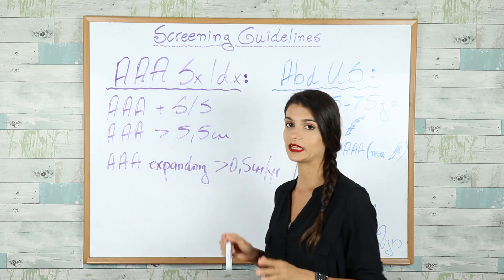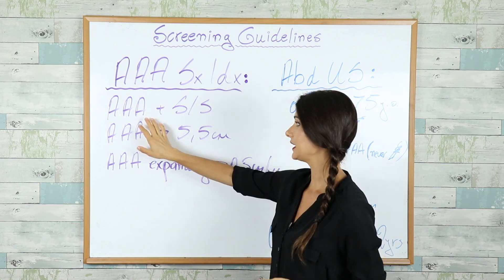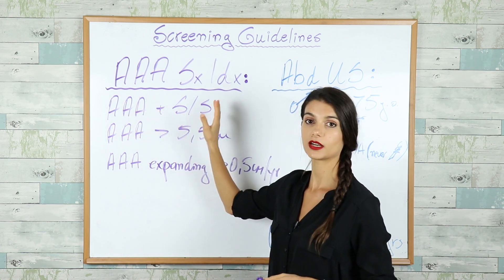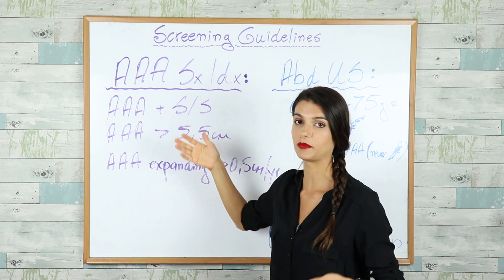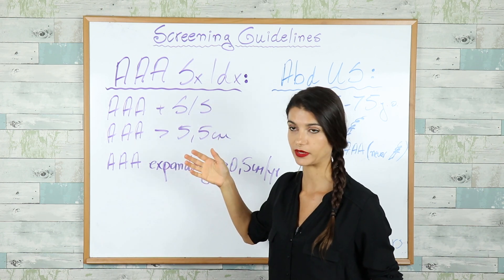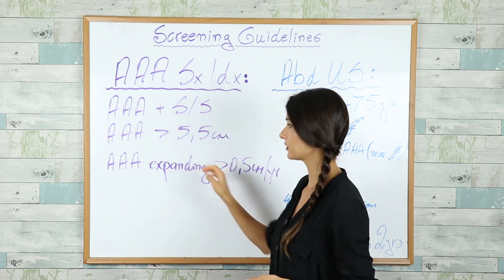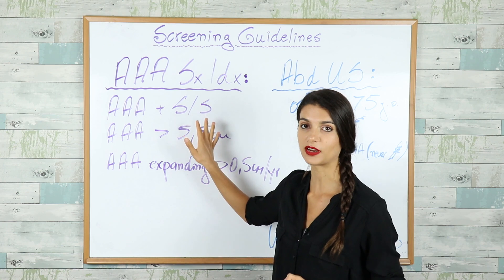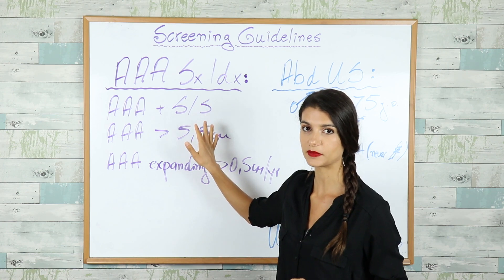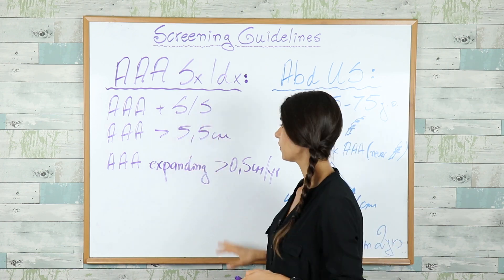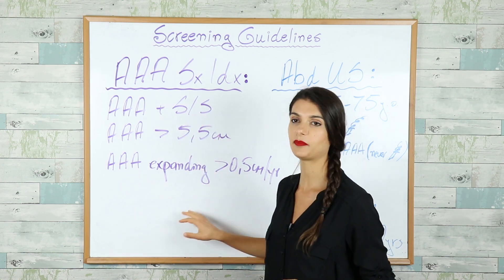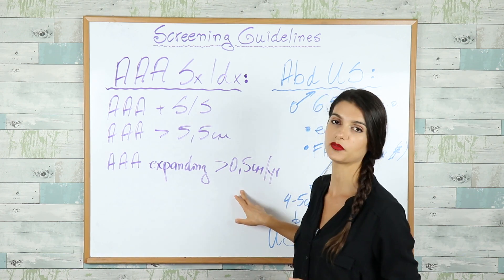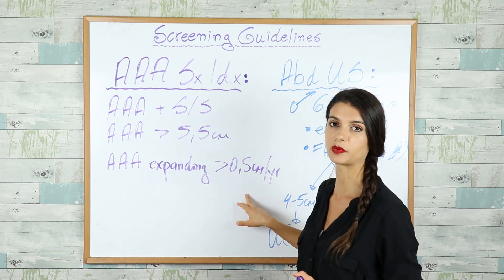Now, who gets the surgery? Patients who have Abdominal Aortic Aneurysm who are symptomatic, or they have an aneurysm more than 5.5 cm in diameter, or an aneurysm expanding with more than 0.5 cm per year.